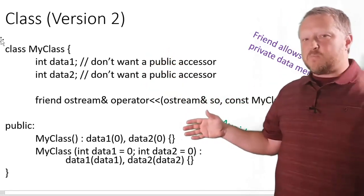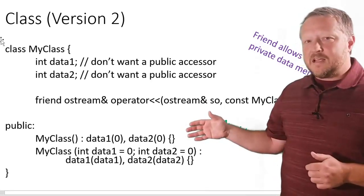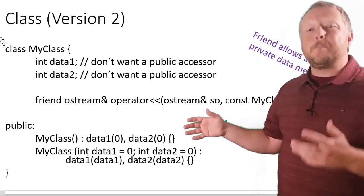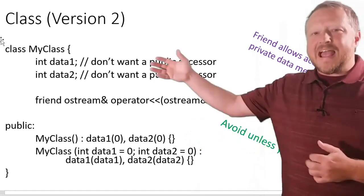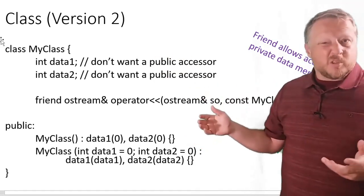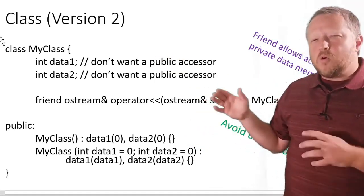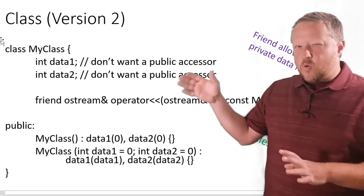But if you remember in the previous class, they both had public methods that would gather the data and then display it or something like that. But what if we don't want that? What if we want it hidden?